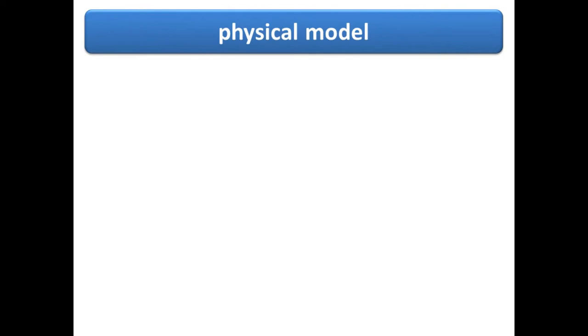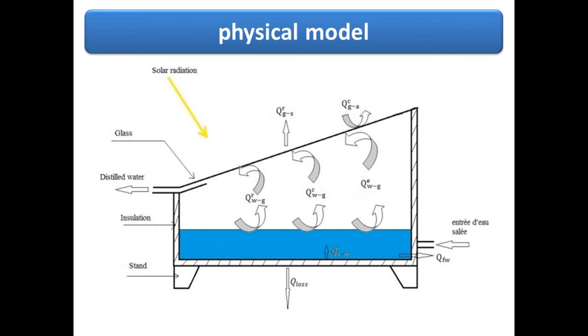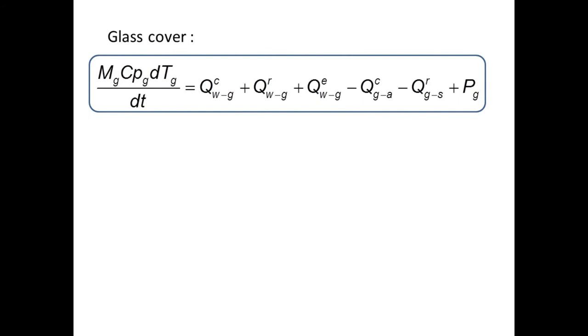The objective of this work is to elaborate a numerical code to simulate solar desalination and research techniques to improve the daily average of solar distillation, to design and realize a solar desalination prototype. The figure shows the physical model of a simple solar still to develop the following equations for each component of the solar still.